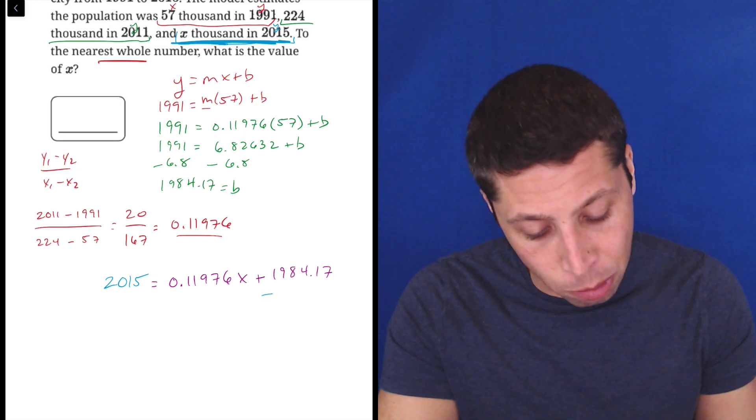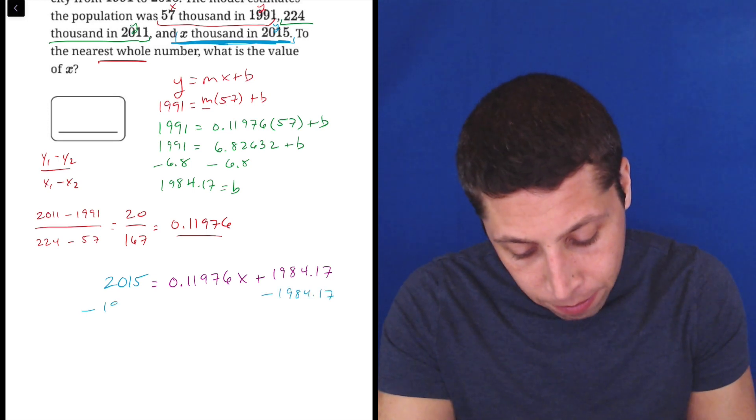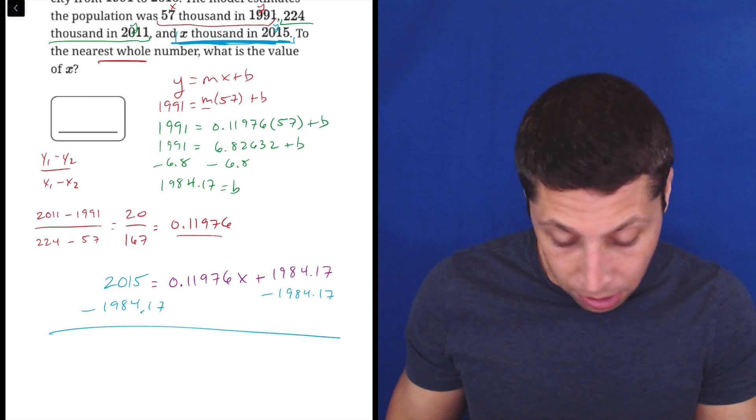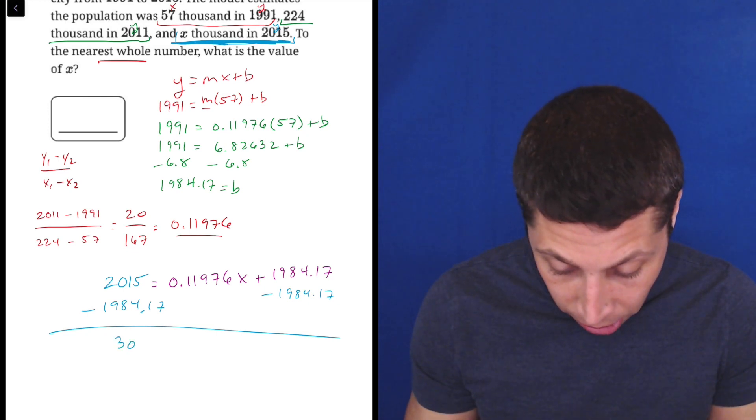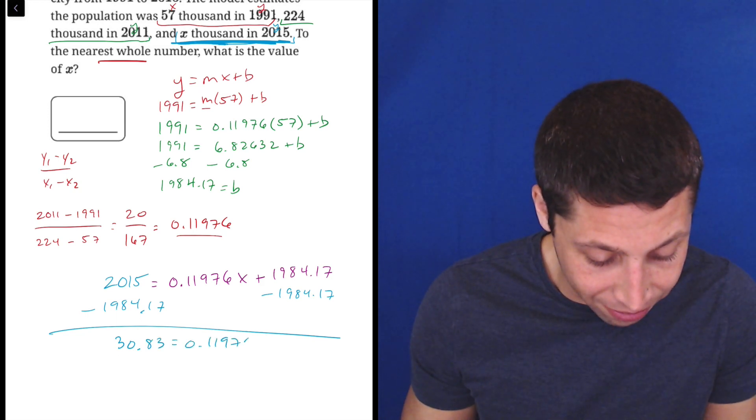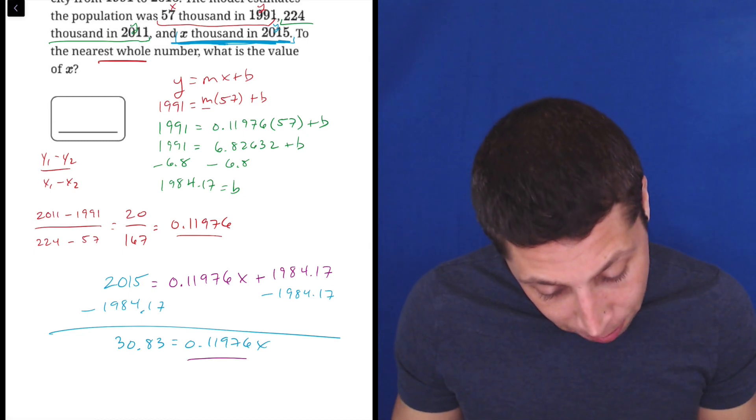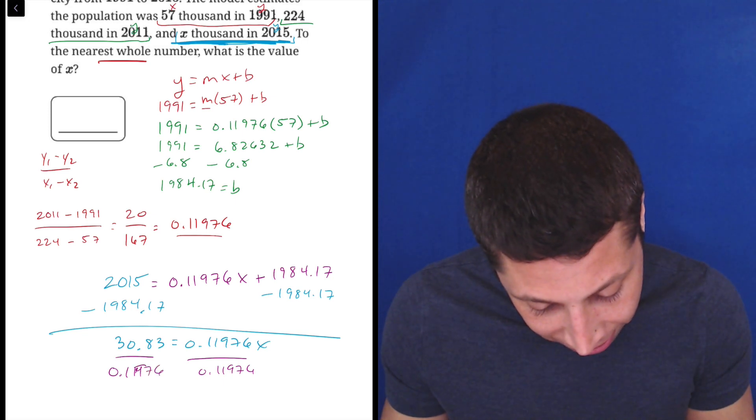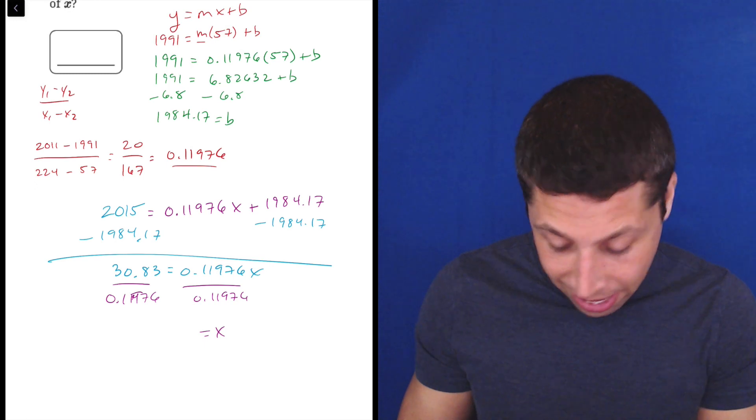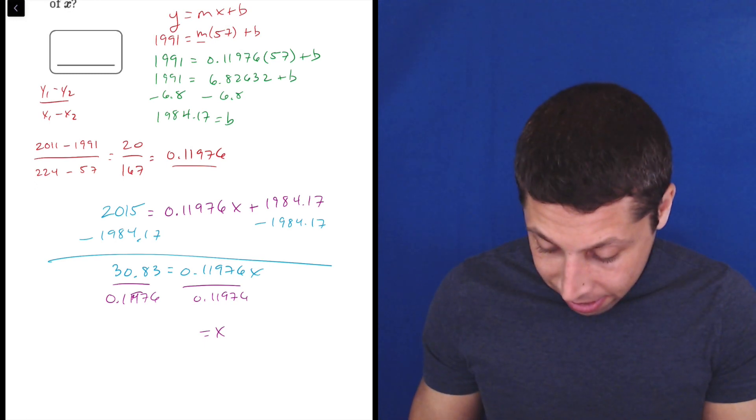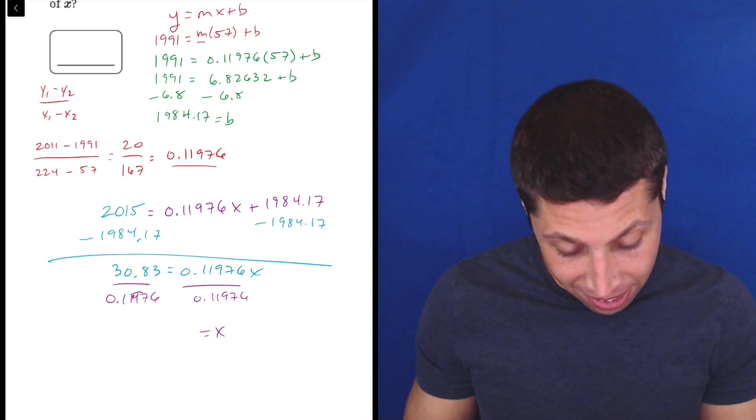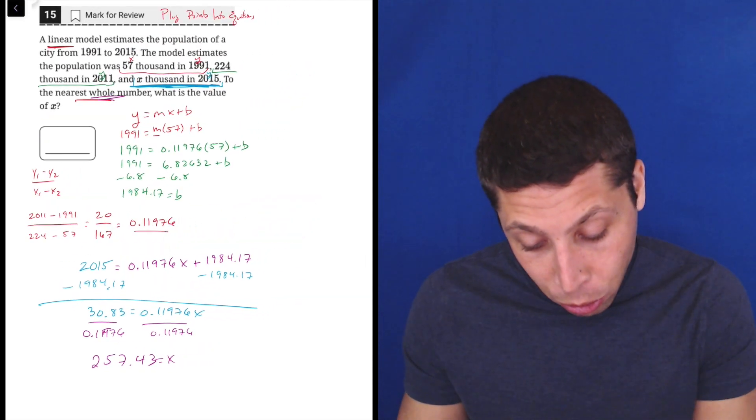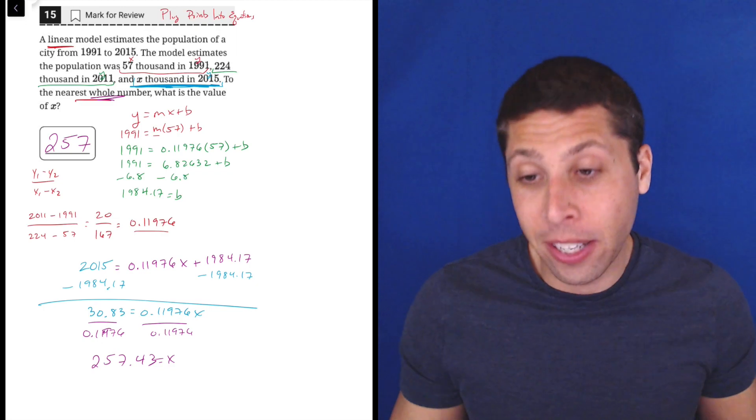Now it's just a matter of doing some algebra. So minus 1984.17. Let's see what happens. 2015 minus 1984.17. We get 30.83 is equal to 0.11976x. Let's divide by 0.11976 to get x alone. So 30.83 divided by 0.11976 is 257.43 and they want this to the nearest whole number. So that is going to be 257, which is the answer.